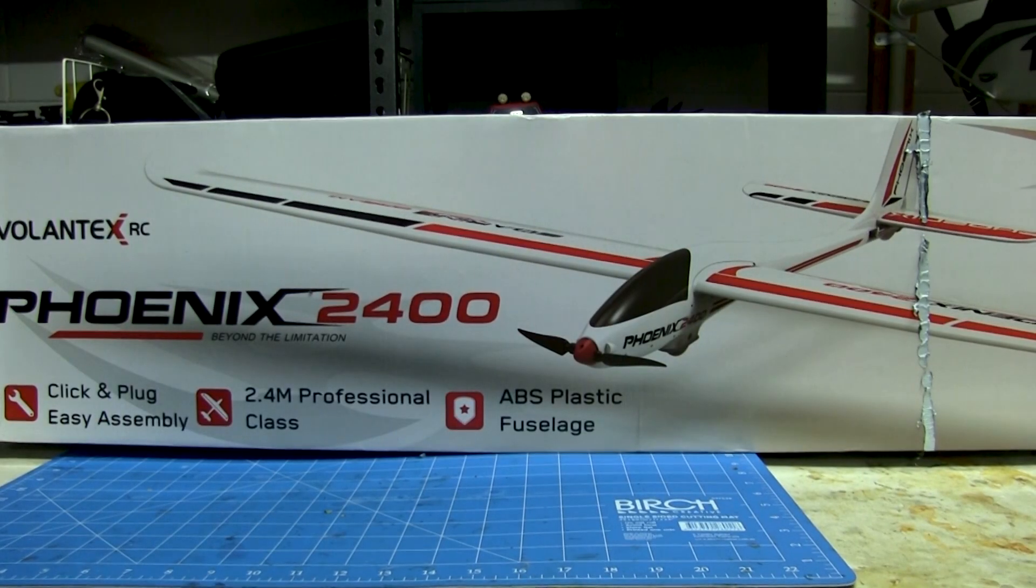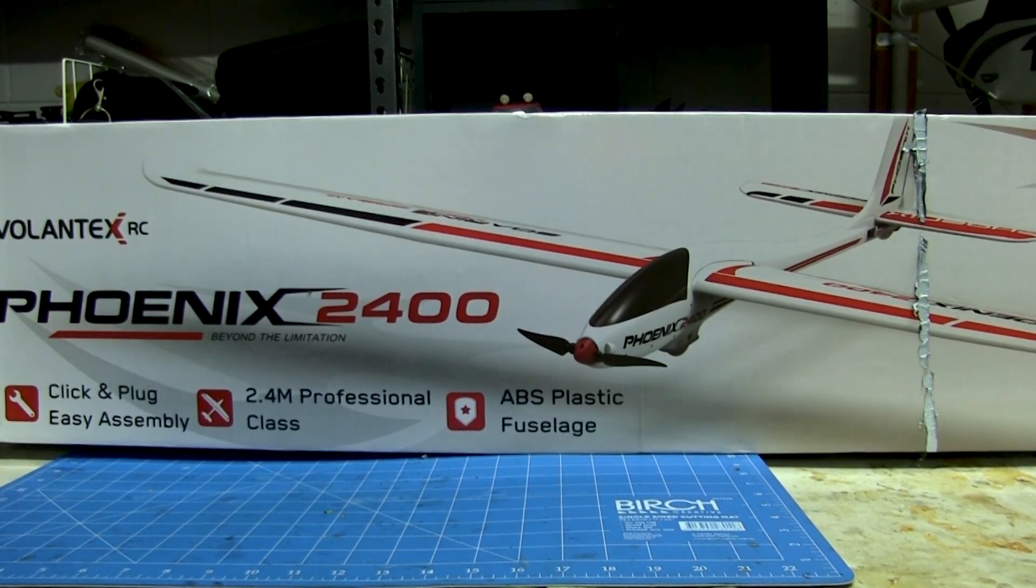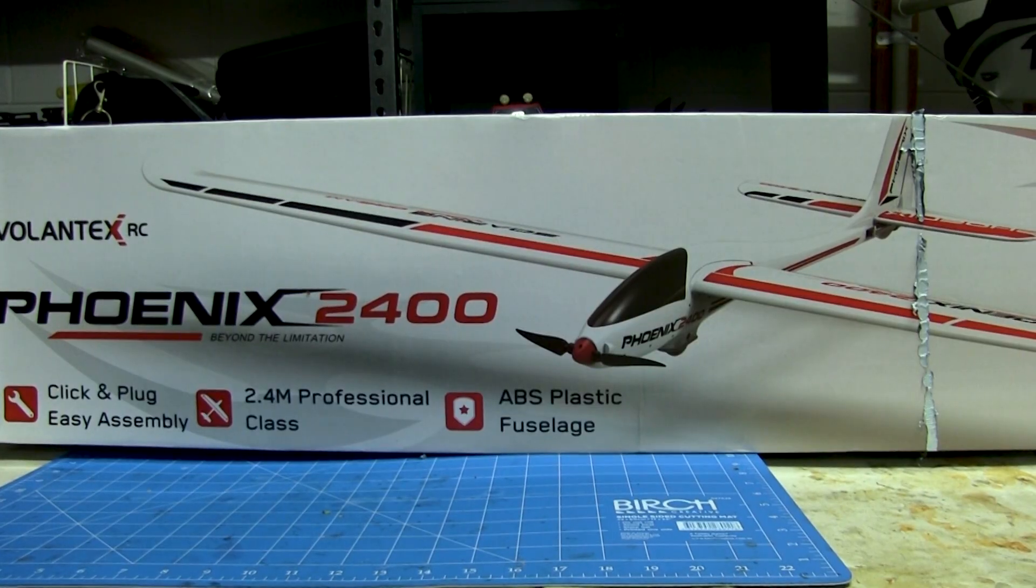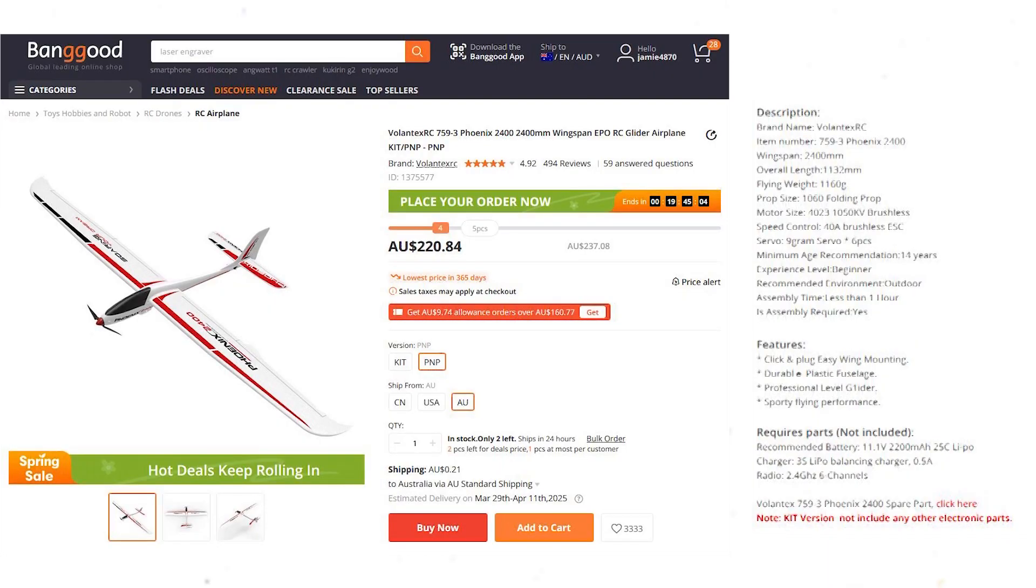G'day all, welcome back to the channel. This is the Volantex RC Phoenix 2400, a 2.4 meter wingspan glider.